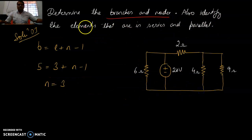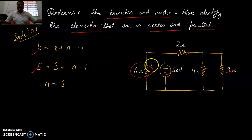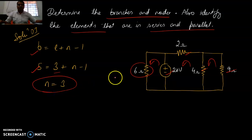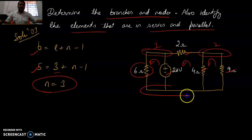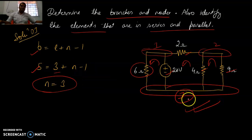For the next circuit: branches and nodes again, also identify elements in series and parallel. The number of elements is 1, 2, 3, 4, 5 — so 5 branches. The number of loops is 1, 2, 3 — three loops. Putting that in the formula gives N equals 3 nodes. You can combine certain terminals to get each node. It's better to look at the picture to identify how many nodes there are.